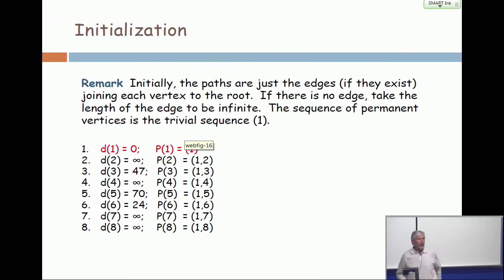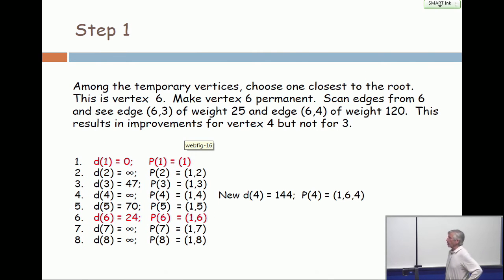So what does the algorithm do? It looks at the temporary distances, and it chooses the minimum one and marks it as permanent. What's that minimum one? It's the distance to six, which is 24. So the next step is that line is going to become permanent. And I look for scans from six, and I've got a scan on vertex four. The original distance to four was infinite, but I look at infinity versus the cost of going to six and paying 24, and then going from six to four.